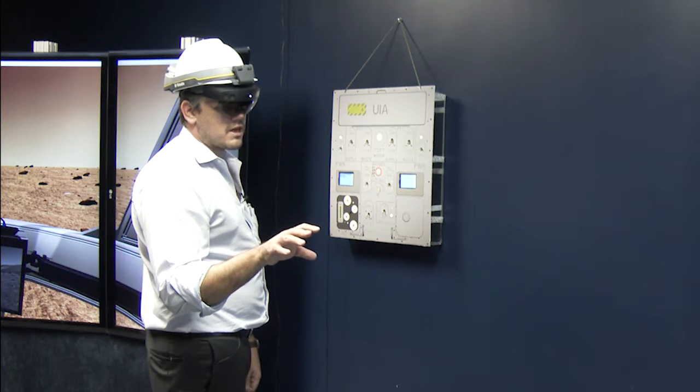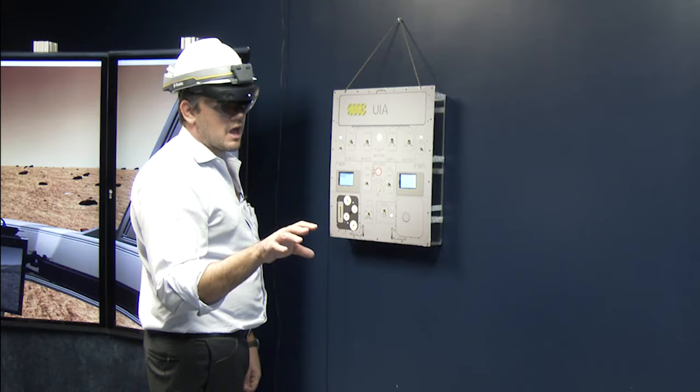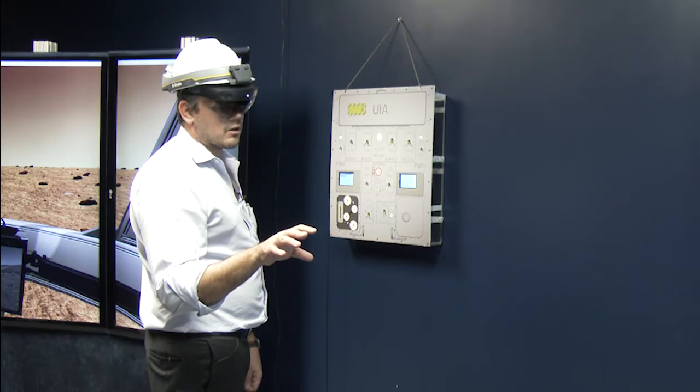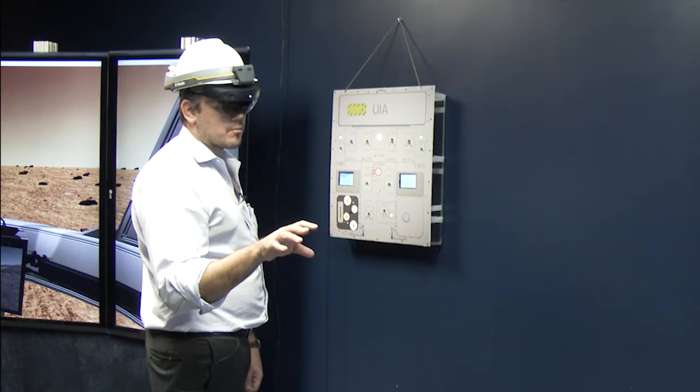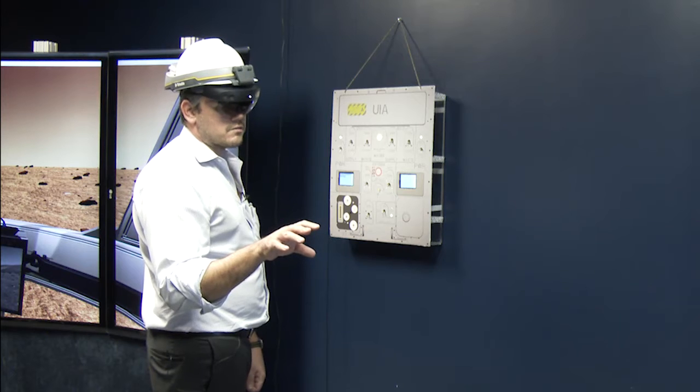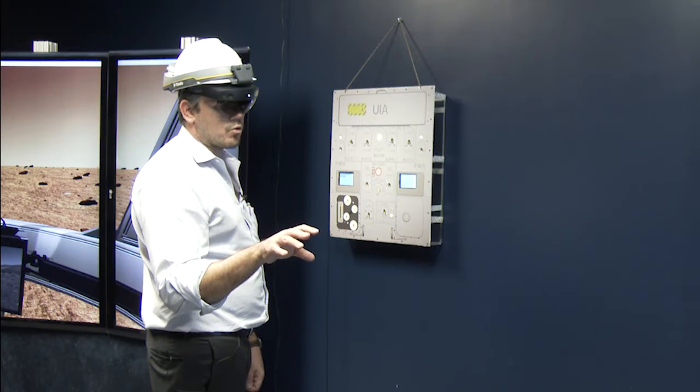Also, they can communicate back and forth between one another. Either through verbal via the HoloLens and seeing video of what the operator is doing, or just verbal cues going back and forth or via text.